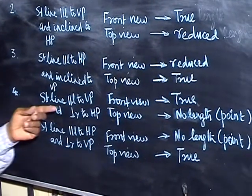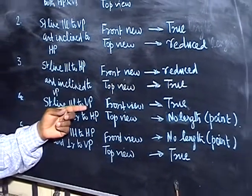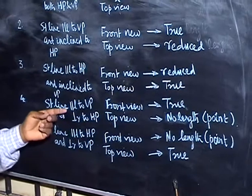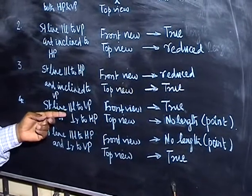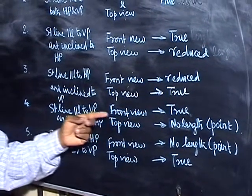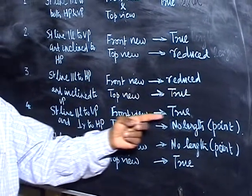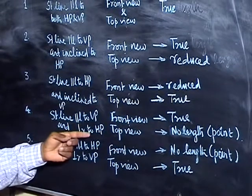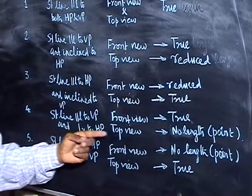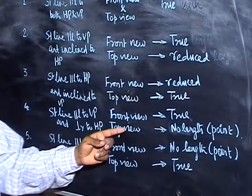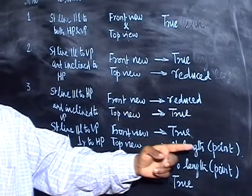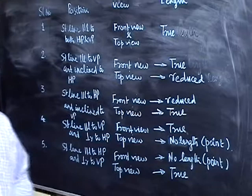In the fourth position, the straight line is parallel to VP and perpendicular to HP. Since it is parallel to VP, the front view gives the true length. Since it is perpendicular to HP, in the top view you will not get any length — you will only get a point.